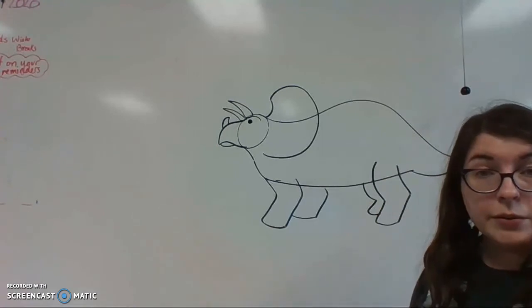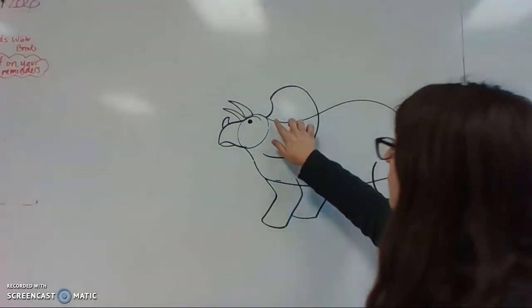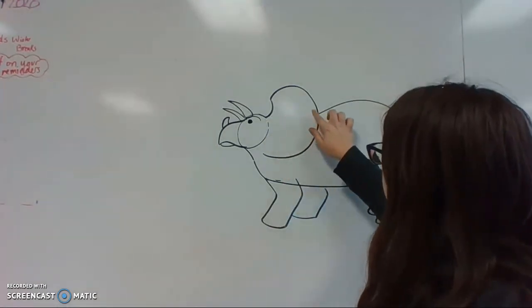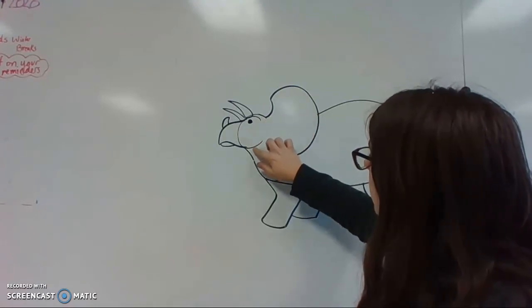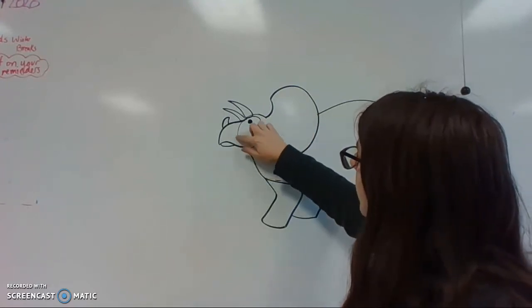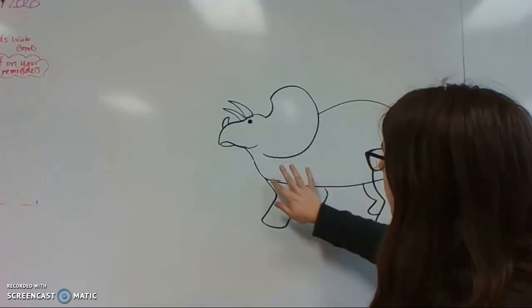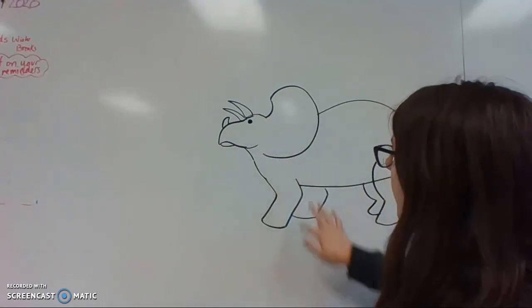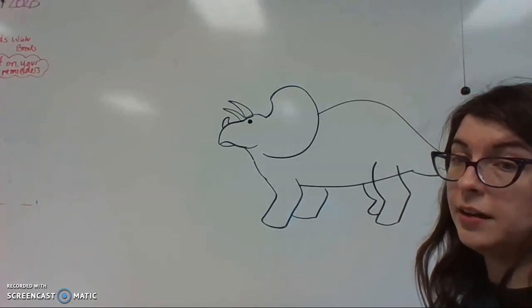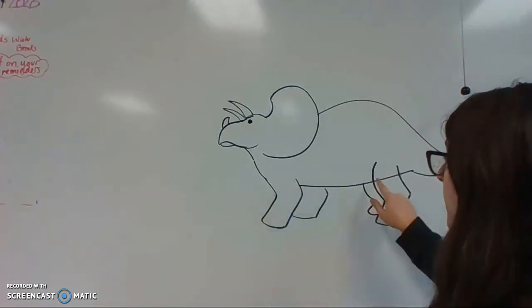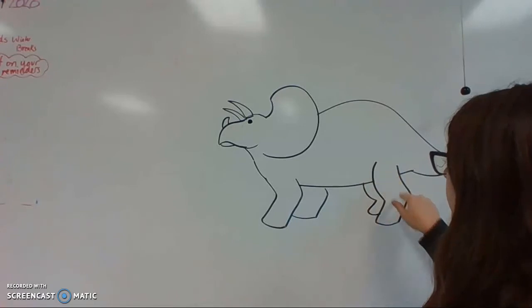Good. Now you can erase some things. Like we're going to erase this line and this line. I'm going to leave some of it. This line. This line. I'm going to erase every other line. I'm going to erase only the legs that I want to be in front. The lines for those ones.